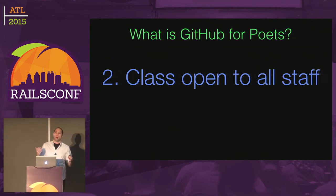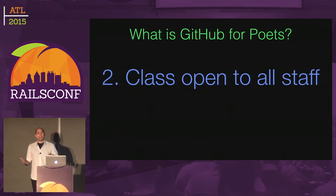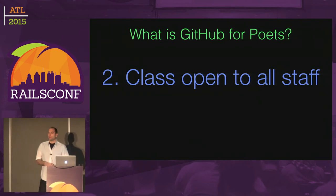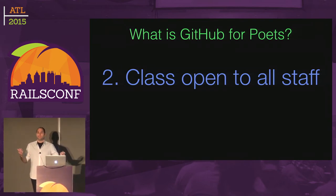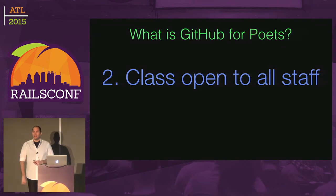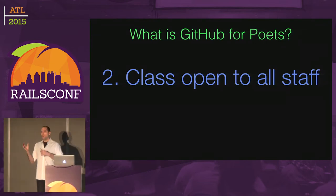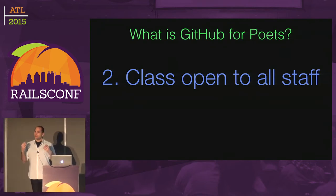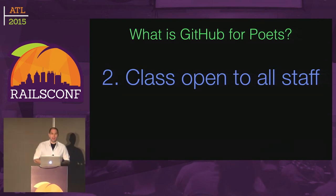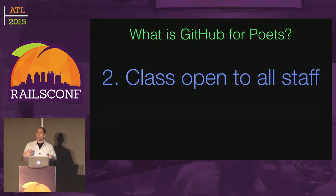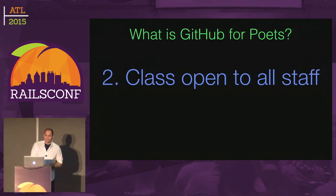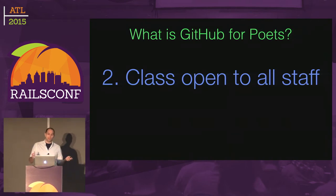GitHub for Poets has grown to become part of the onboarding process for new employees. I think of it as analogous to how a lot of companies have customer support rotations, where every new employee spends a day answering support emails to get to know what customers see when interacting with the product. Similarly, if you want to know how engineering and product development works, showing people this cycle of how the sausage gets made is really eye-opening — and often startlingly easy for people who assume you're doing really complicated genius hacker stuff because that's how it's portrayed in Hollywood.